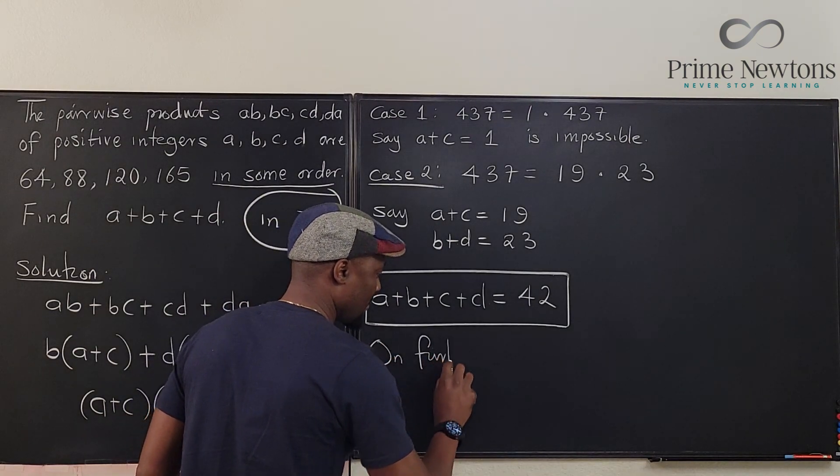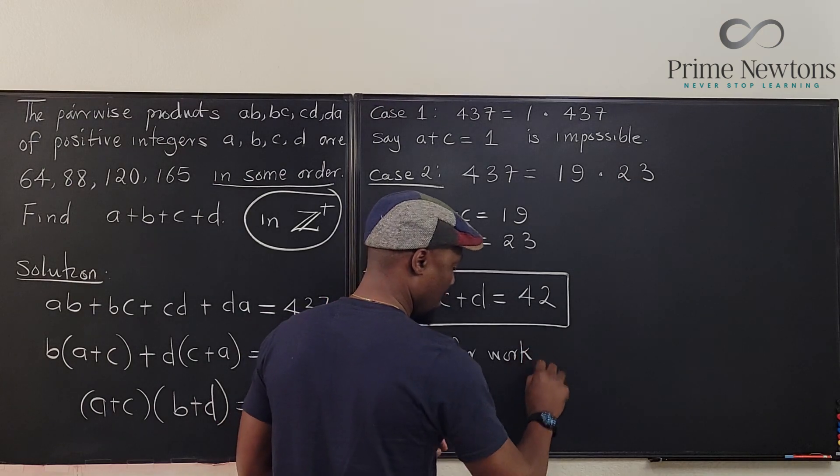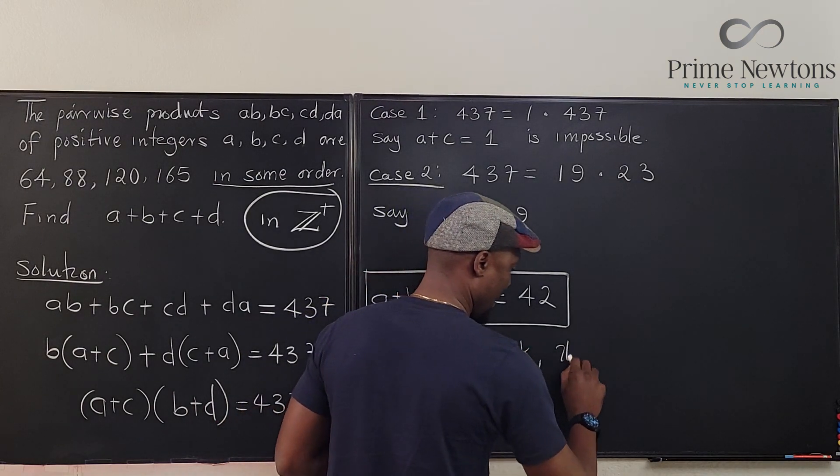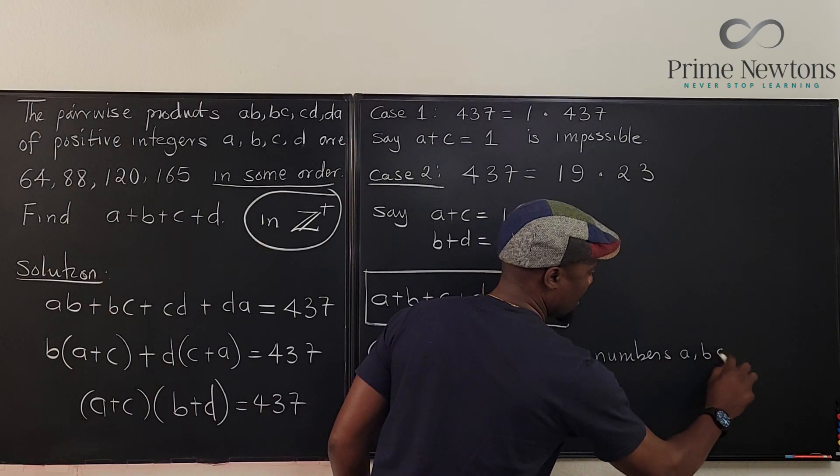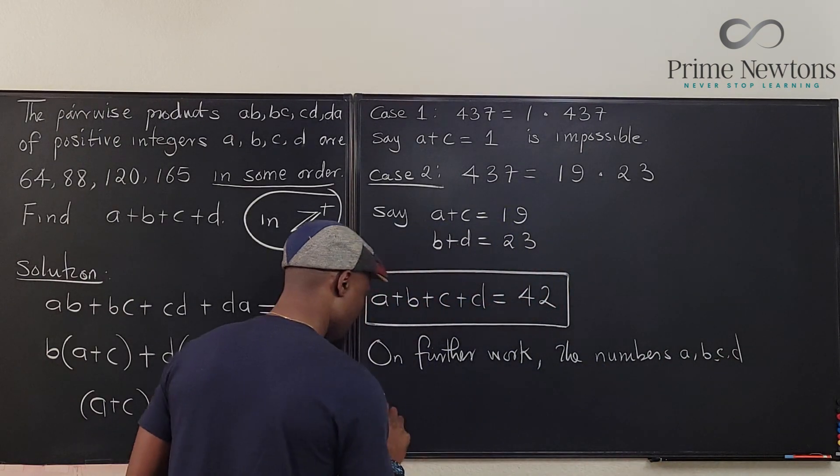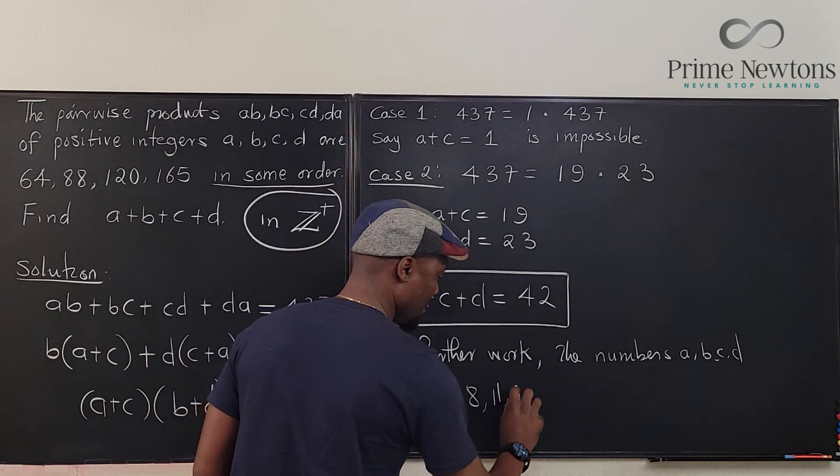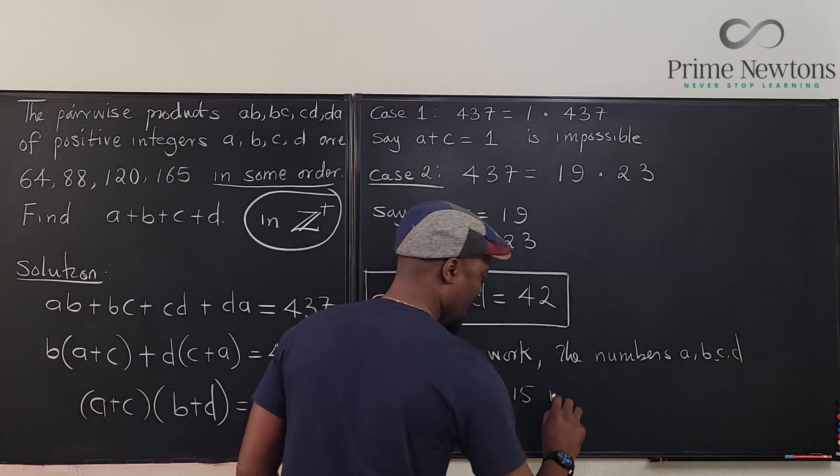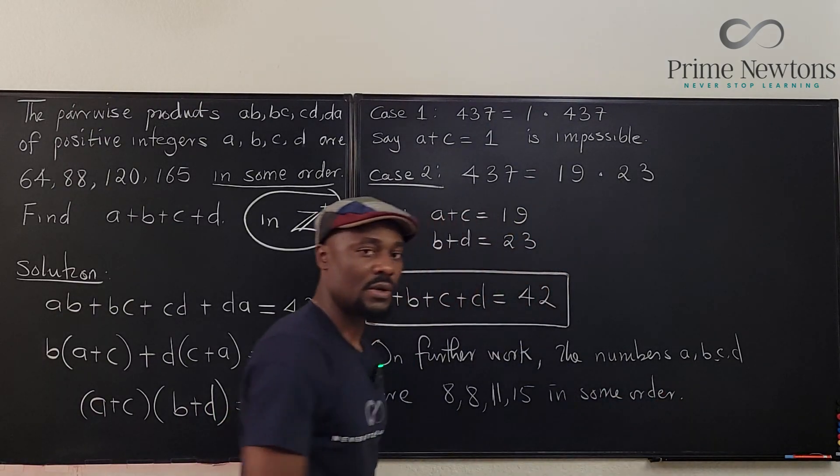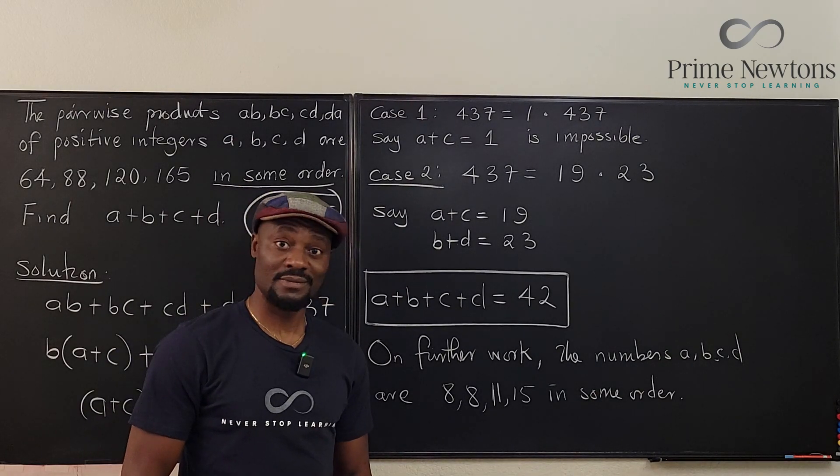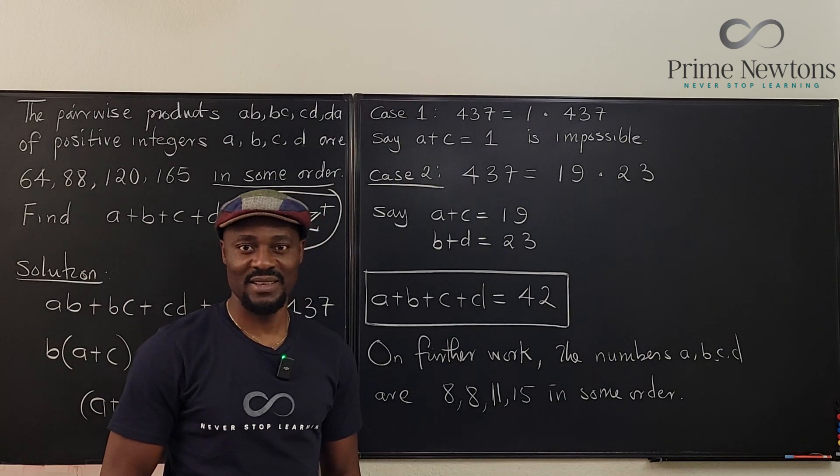You might be able to figure out that the numbers will have to be 8 and 11 and 15. Those are actually facts. On further work, the numbers A, B, C, D are 8, 11, 15 in some order. Never stop learning. Those who stop learning stop living. Bye-bye.